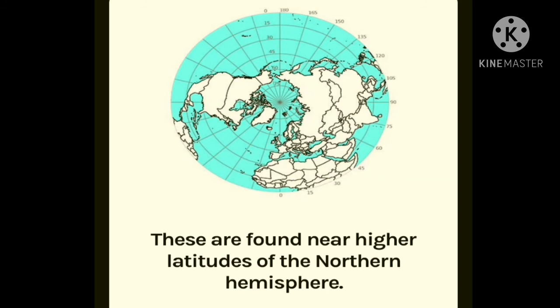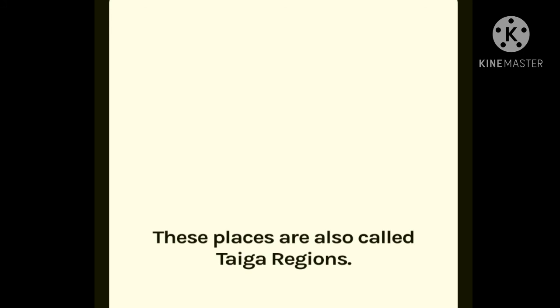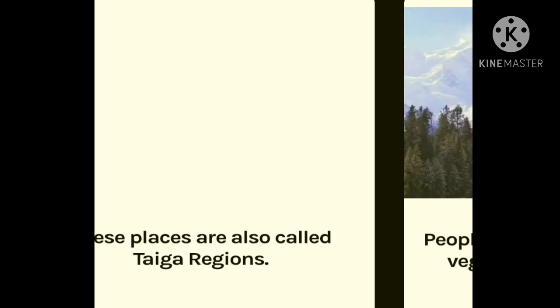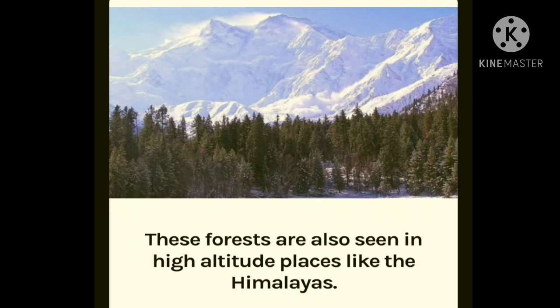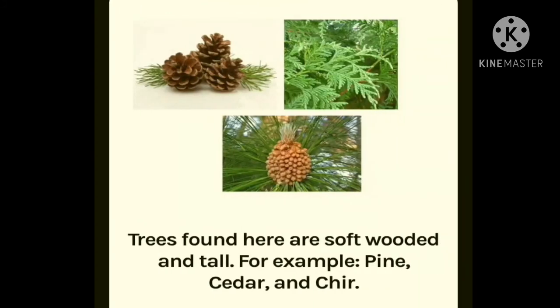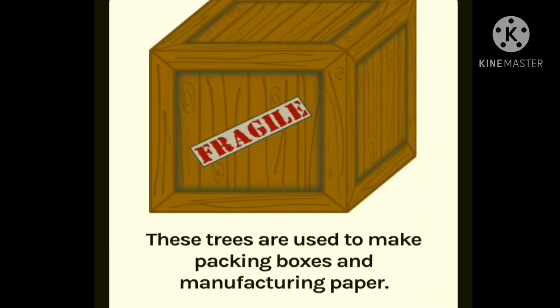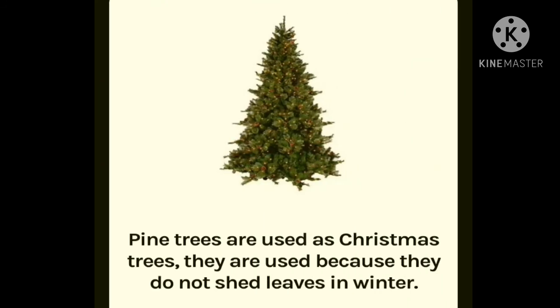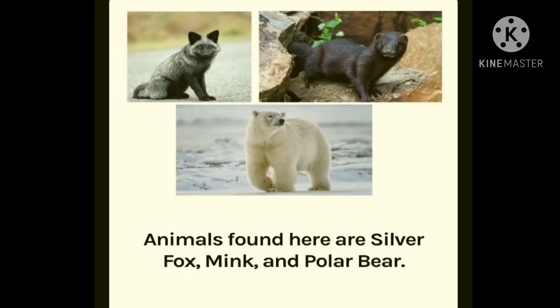Next is the coniferous forest. These are found near the higher latitudes of the northern hemisphere and are also called taiga regions. These forests are also seen in high altitude places like the Himalayas. Trees found here are soft-wooded and tall — for example, pine, cedar and chir. These trees are used to make packing boxes and for manufacturing paper. Pine trees are used as Christmas trees because they do not shed leaves in winter. Animals found here are silver fox, mink and polar bear.